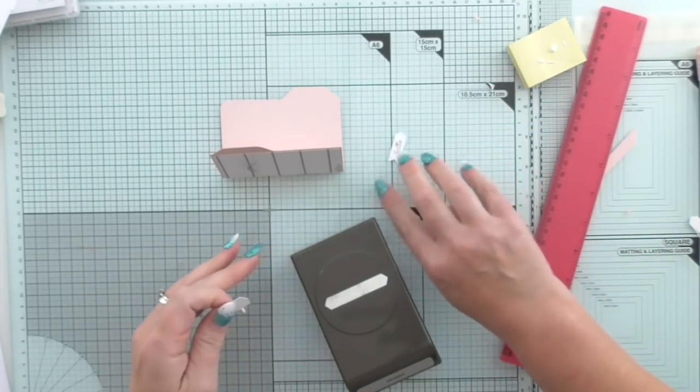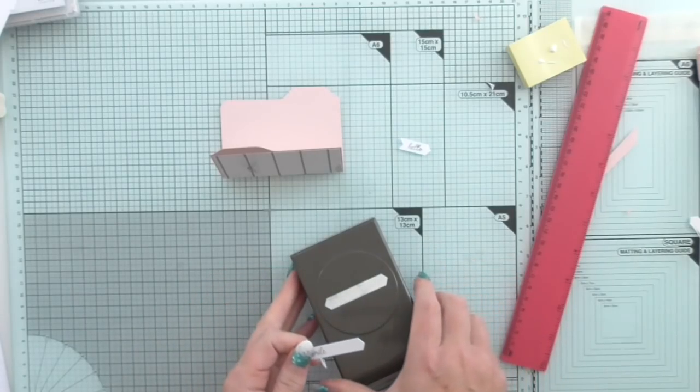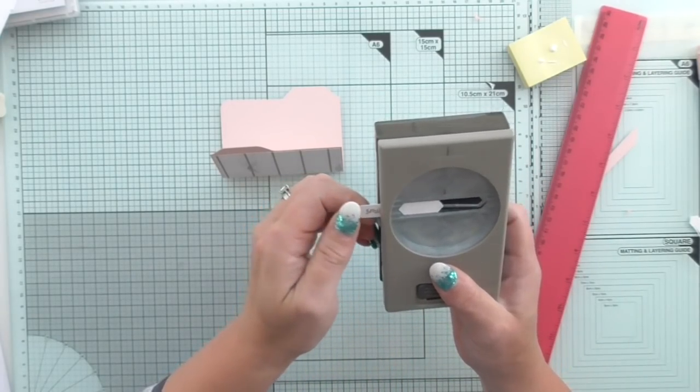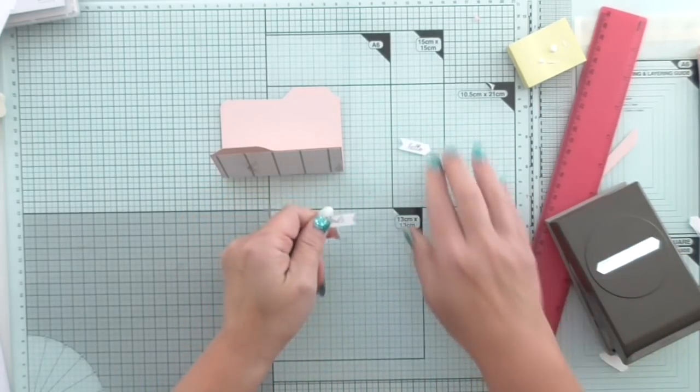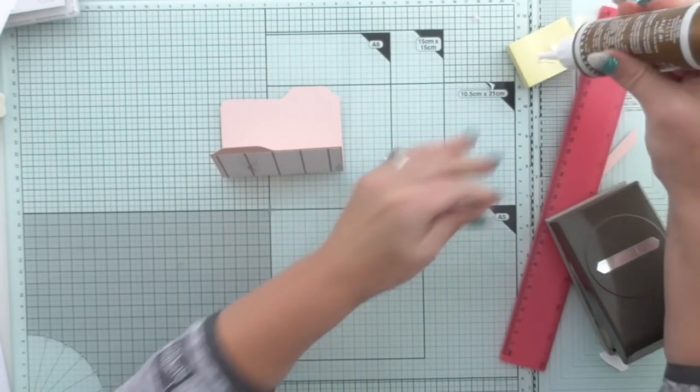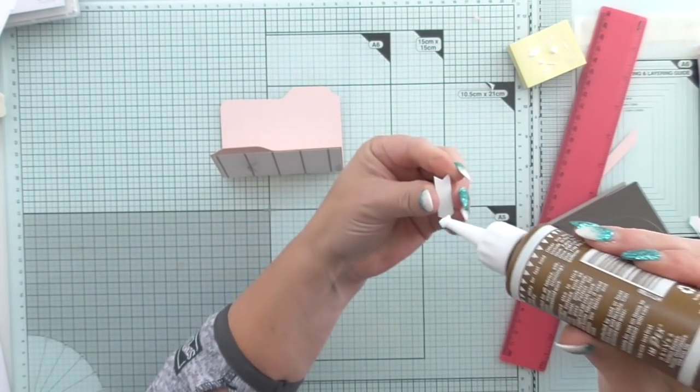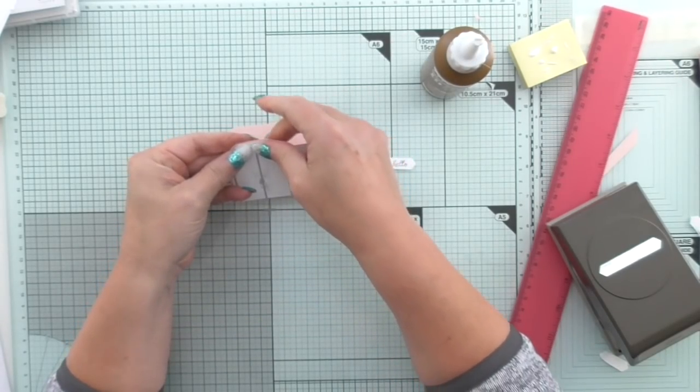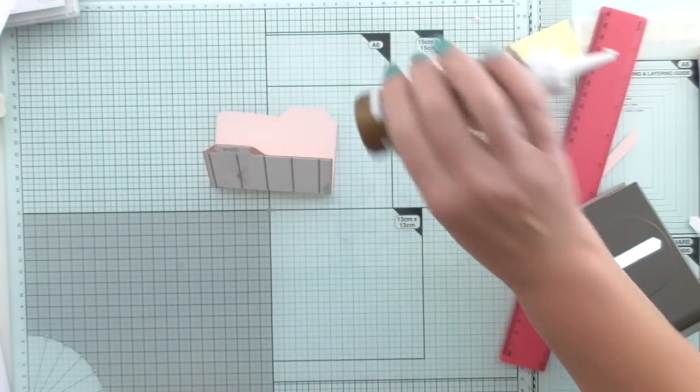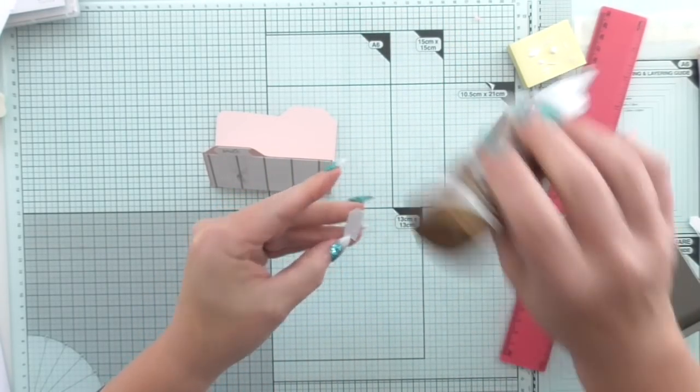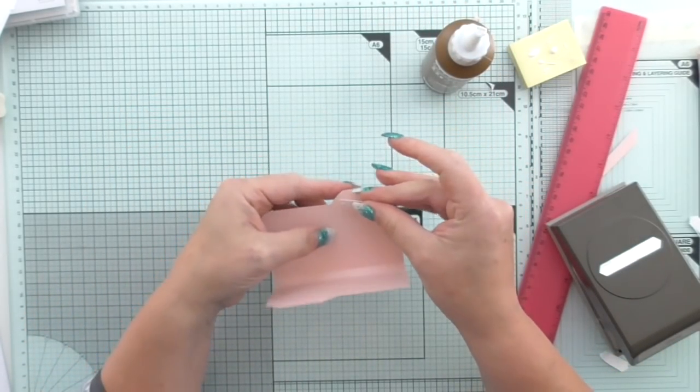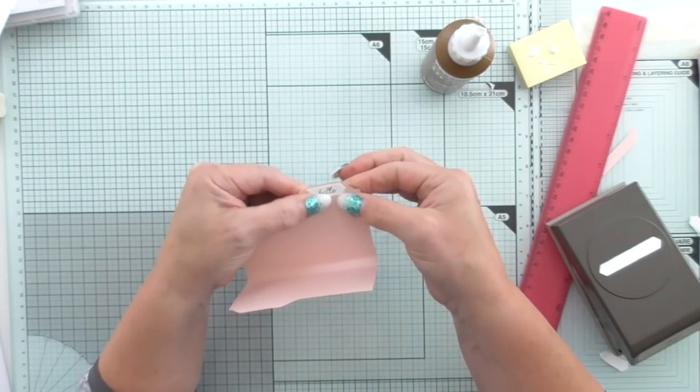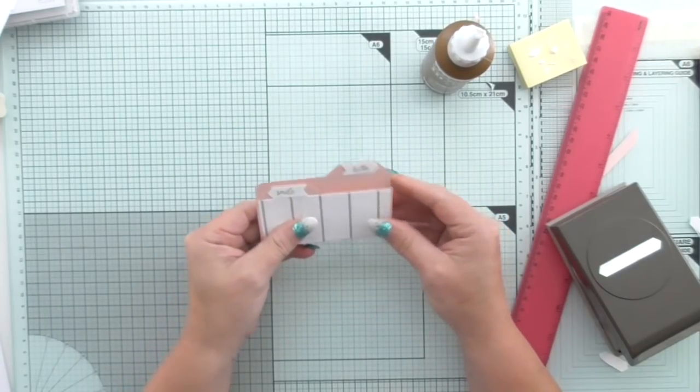Then what you want to do is go back in with your label punch, and by feeding it back through the other way, we're going to turn it into a banner. So you've got two little banners there, and we're going to glue one on there and one on the other one.